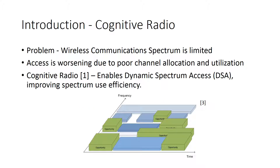With growing wireless technologies, access to the spectrum is increasingly becoming more limited. This is worsening due to poor channel allocation and spectral utilization across various licensed and unlicensed bands. With spectral holes that could be utilized for wireless communication, a cognitive radio device has been proposed to enable a form of dynamic spectral access, improving spectral usage efficiency and making use of opportunities for proper communication.